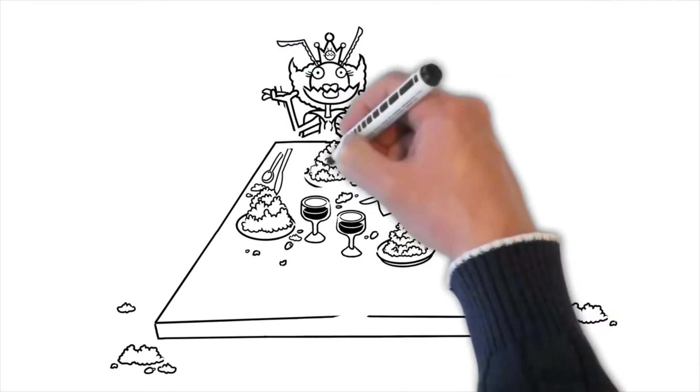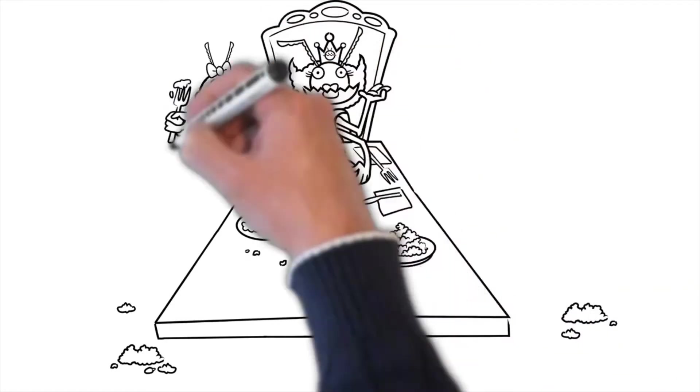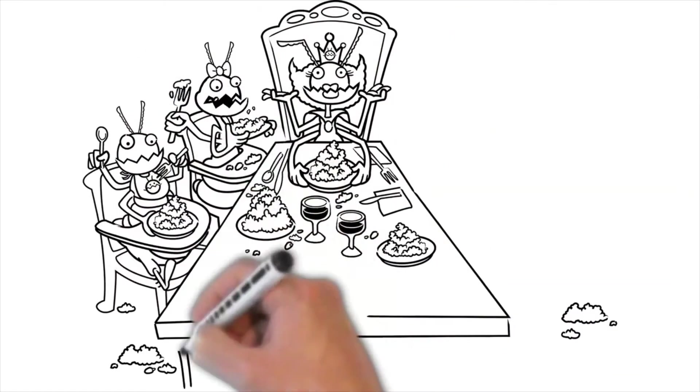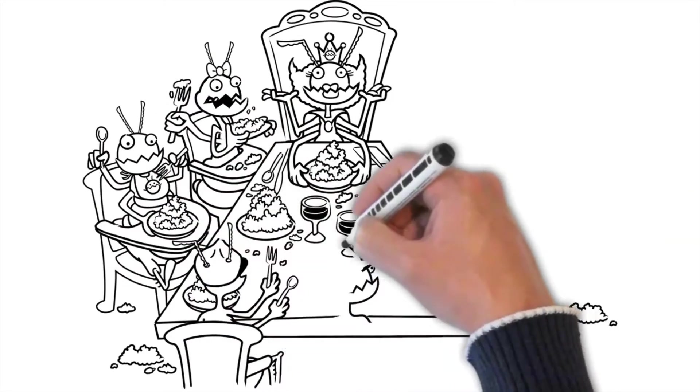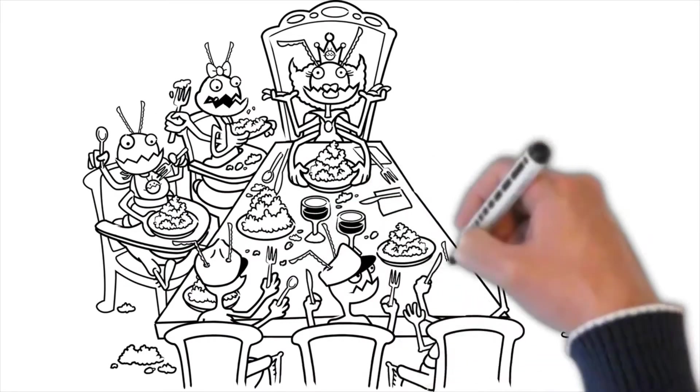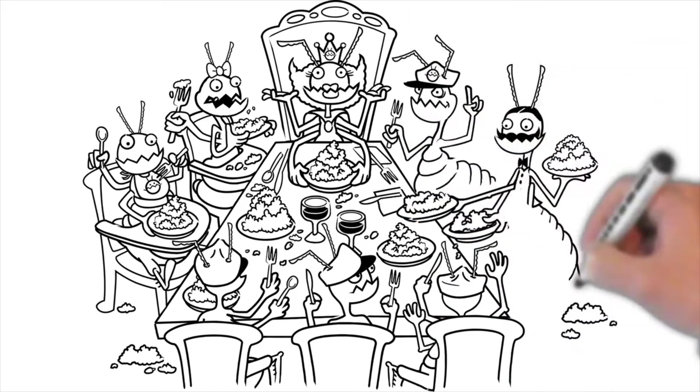Inside a termite colony, the royal family sits comfortably at their table, surrounded by their bodyguards and their young, just eating away. They never have to leave the colony because they have older worker termites bringing them food.